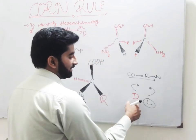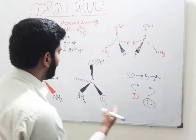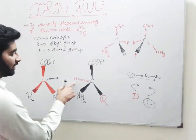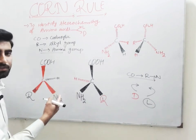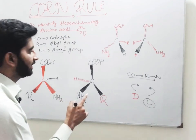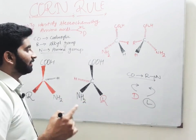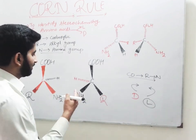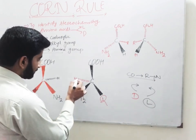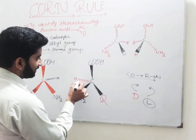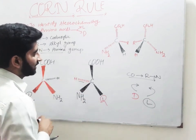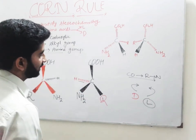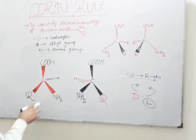But this case is only valid when our lowest priority group, that is hydrogen, is directed away from the observer and is represented by the dash bond.